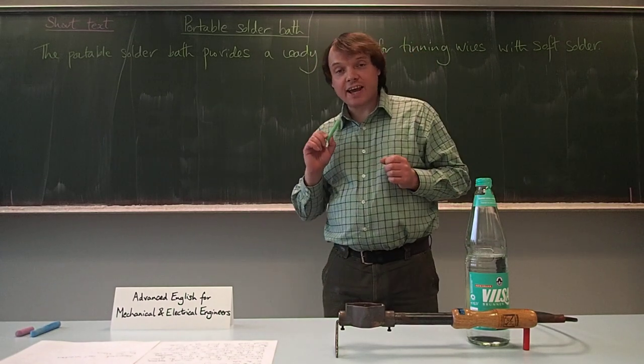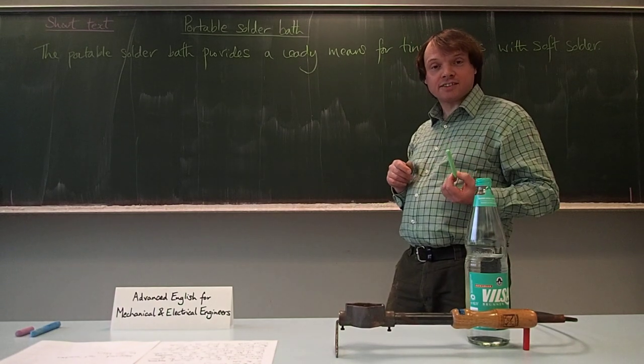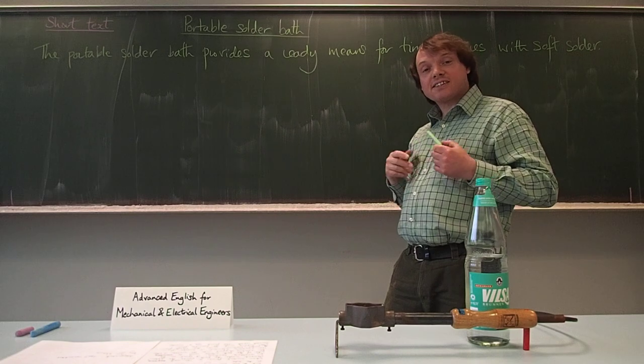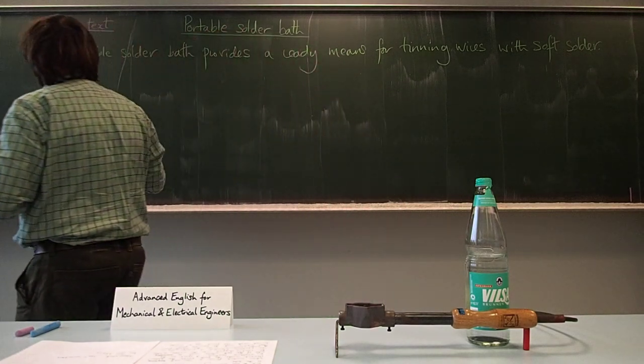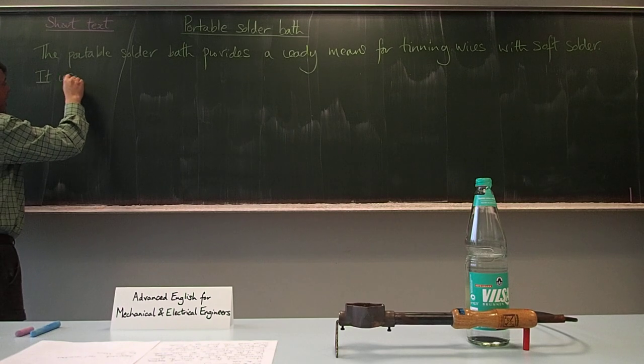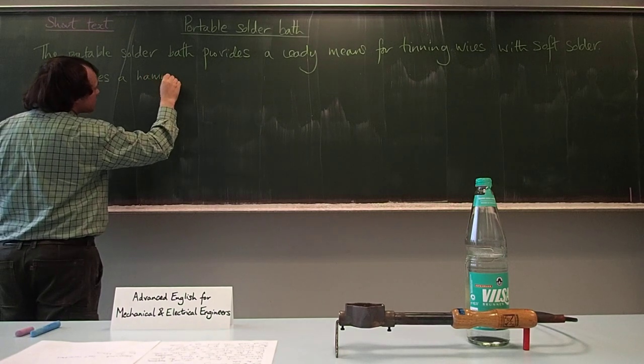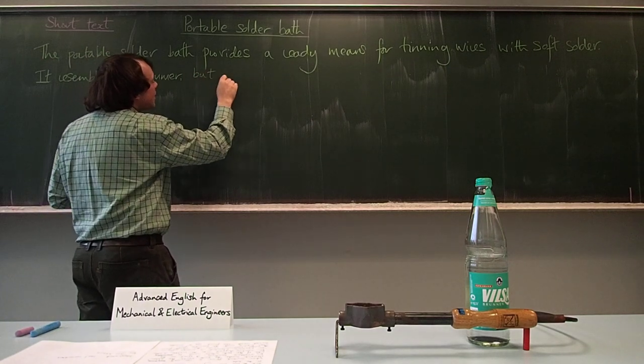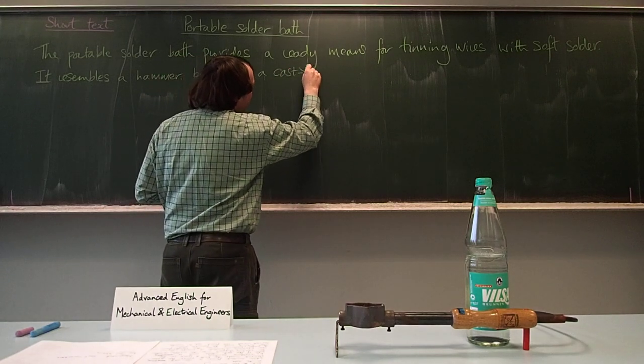So now that we've named the subject of the text, we can begin the next sentence with the word 'it,' which is then - it's obvious that it refers back to the portable solder bath, because that's the only thing which is singular in the first sentence, and it's the subject of the text. So we can say: It resembles a hammer, but with a cast iron bath.